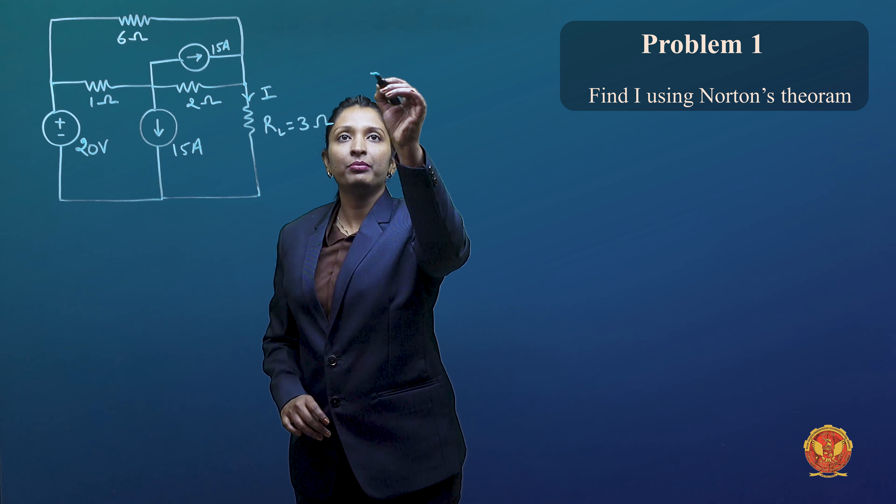We can apply KCL at this node. The outgoing current: (V minus 20) divided by 1, plus 15, plus (V minus 0) divided by 2. This branch is short-circuited, meaning it is at 0V potential. So I can write (V minus 0) divided by 2, and since this is at 0V, 15 will be equal to 0.